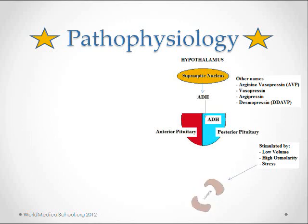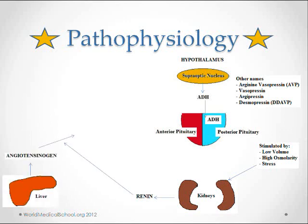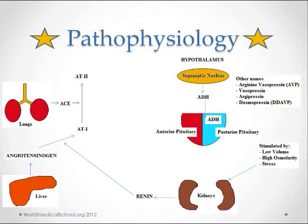When the kidney gets a signal that the body is low in volume, it secretes renin from the juxtaglomerular apparatus with input from the macula densa. Renin then converts angiotensinogen from the liver to angiotensin 1. Angiotensin 1 is then converted by angiotensin-converting enzyme from the lungs to angiotensin 2. Angiotensin 2 has four functions: it vasoconstricts the efferent arteriole in the kidneys, and it stimulates the release of aldosterone from zona glomerulosa in the adrenal cortex. Aldosterone controls the sodium-potassium ATPase pump, which increases sodium and water reabsorption.